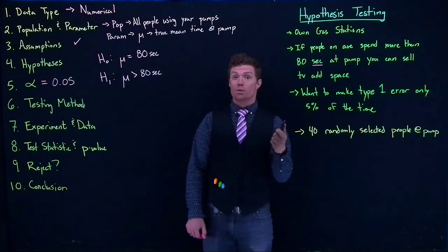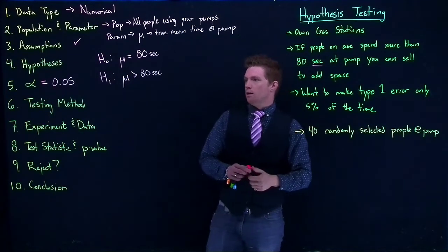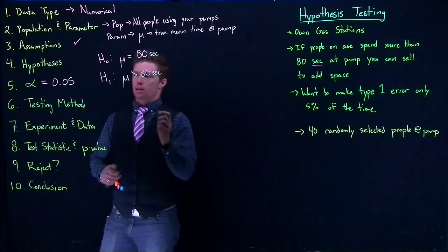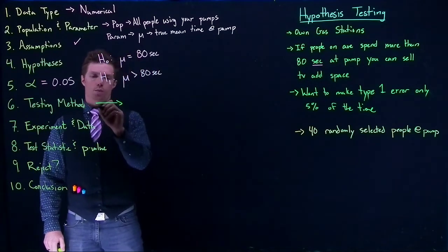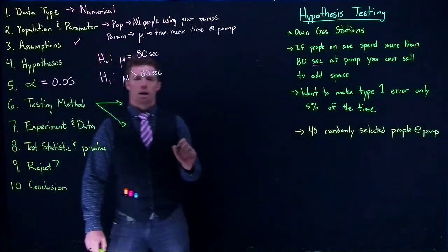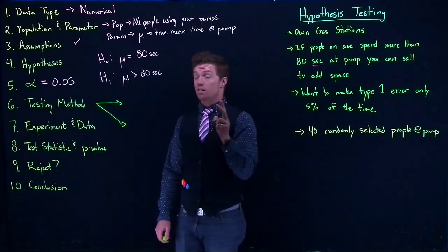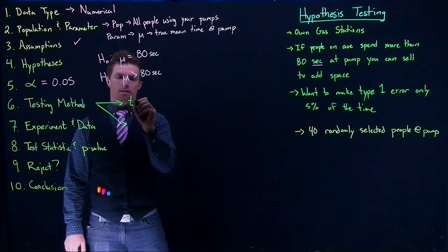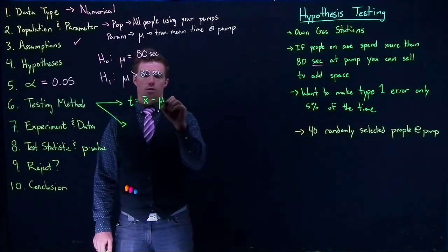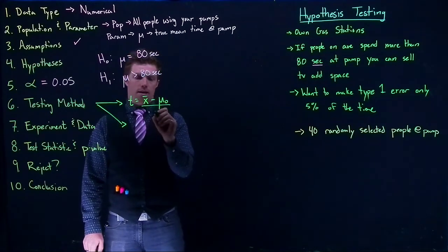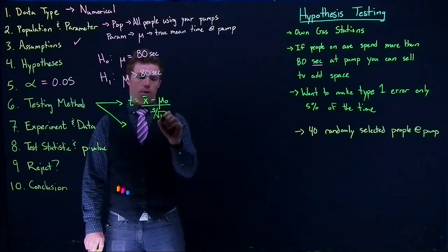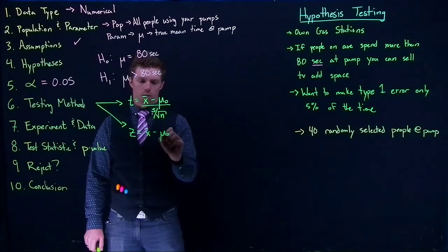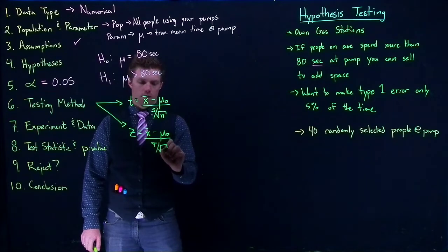Next we figure out what method to use. We know two types when dealing with means. The t-method: t equals x-bar minus mu-naught divided by s divided by the square root of n. Or the z-method: x-bar minus mu-naught divided by sigma divided by the square root of n.